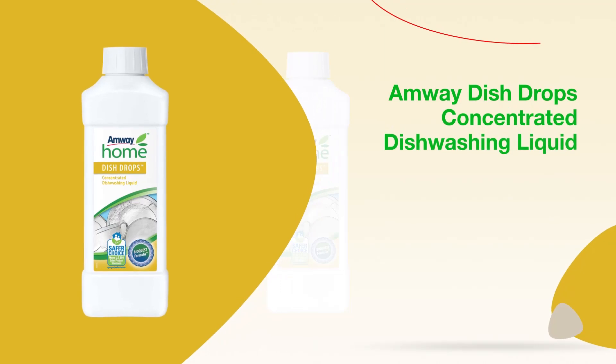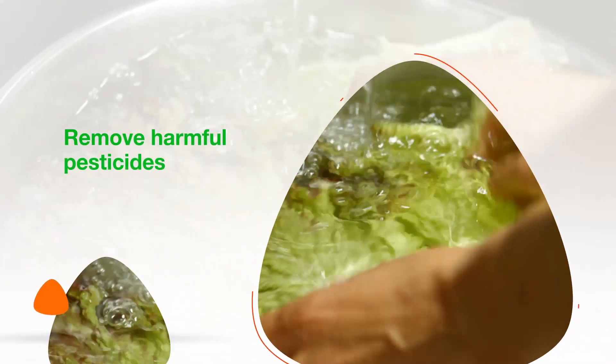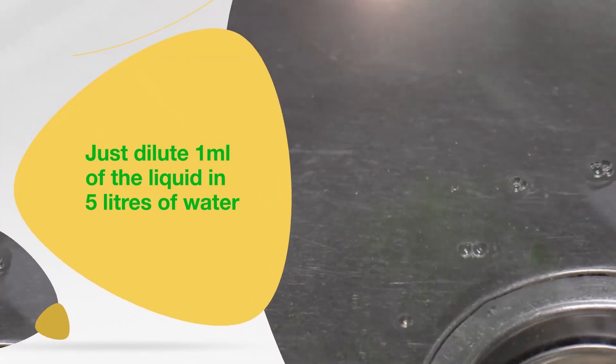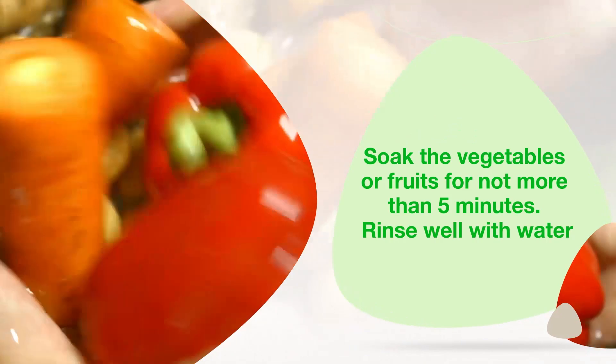The Dish Drops Concentrated Dishwashing Liquid is also safe to be used on fruits and vegetables to remove harmful pesticides. Just dilute 1 milliliter of the liquid in 5 liters of water. Soak the vegetables or fruits for not more than 5 minutes and rinse well with water.